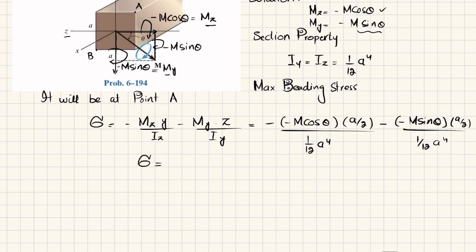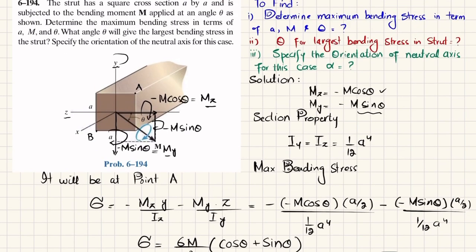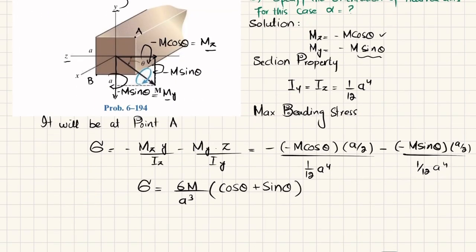Solving these expressions, we get σ = (6M / a³)(cosθ + sinθ), which is the maximum bending stress in terms of a, M, and theta. This is the answer to the first part.